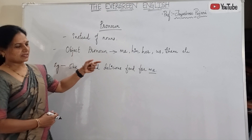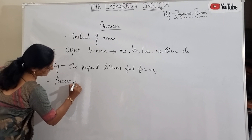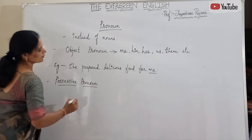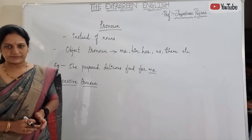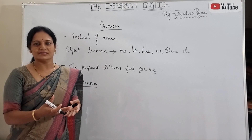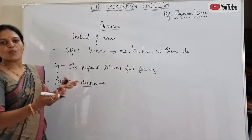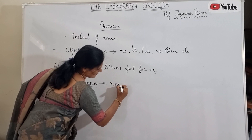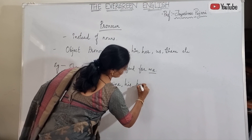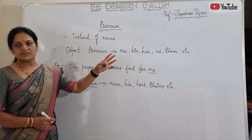Next, we will move on to possessive pronouns. Possessive pronouns are words which relate to ownership. When we talk about possessiveness — 'it's mine,' 'it belongs to her,' 'mine,' 'his' — these are possessive pronouns. They express relating to or wanting to possess things. Examples include: mine, his, hers, theirs, and so on.